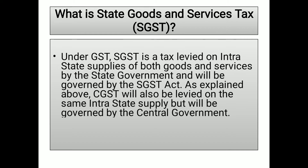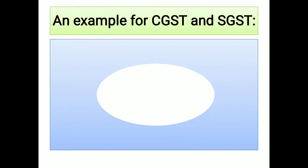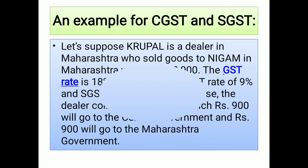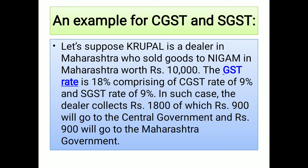For intra-state movement, both CGST and SGST apply. The SGST — State Goods and Service Tax — is collected by the state government. Let's understand the difference between CGST and SGST with an example. Suppose Krupal is a dealer in Maharashtra who sold goods to Nigam in Maharashtra worth rupees 10,000. Here the transfer of goods is happening within the state.